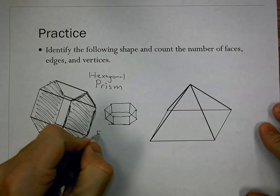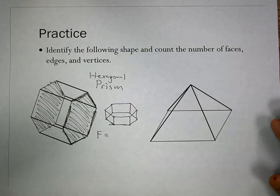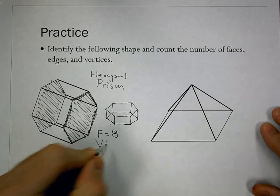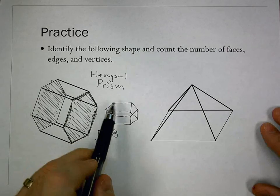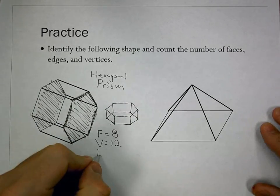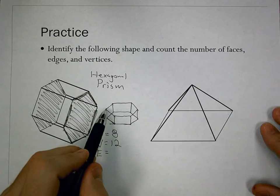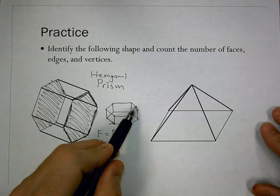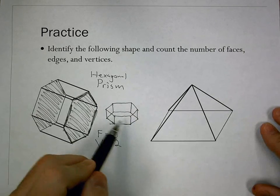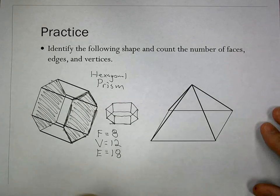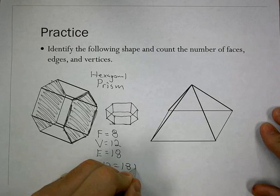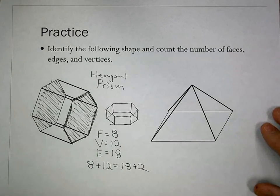Now, the number of faces. I have two bases, top and bottom. And I have six walls going around. It gives me eight. The number of vertices. That's the number of corners. I have six on top. Six on bottom. It gives me 12. The number of edges. That's the number of sides, or the number of lines drawn. I have six to make the hexagon on top. Six to make the hexagon on bottom. And then six to connect. It gives me 18. Well, I have my answers. I might as well check with Euler's Theorem. Let's see. 8 plus 12 equals 18 plus 2. It looks like 20 equals 20. So, our values are good.